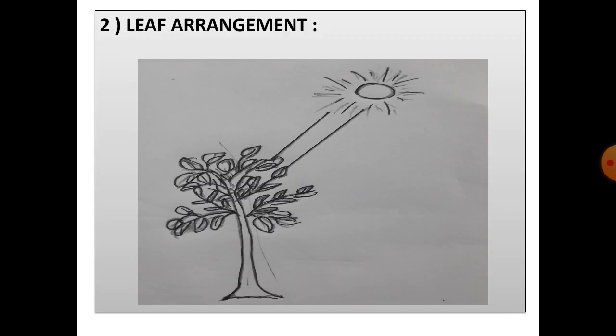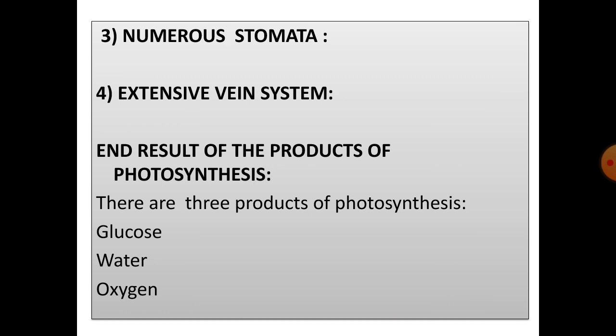Leaf arrangement. The leaves are arranged at right angles to the light source to obtain maximum light. Numerous stomata. Most leaves have numerous stomata so that there can be rapid exchange of gases, both oxygen and carbon dioxide.